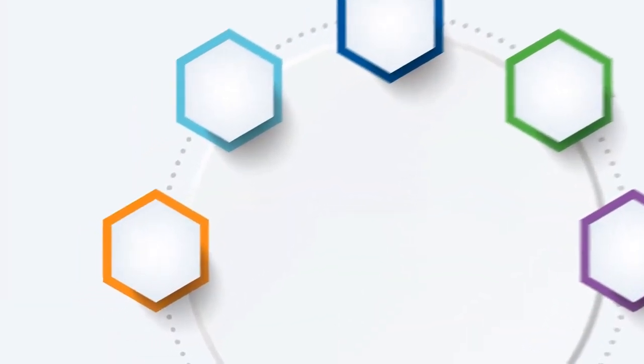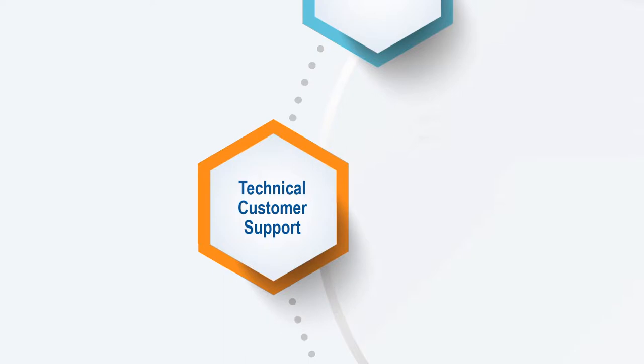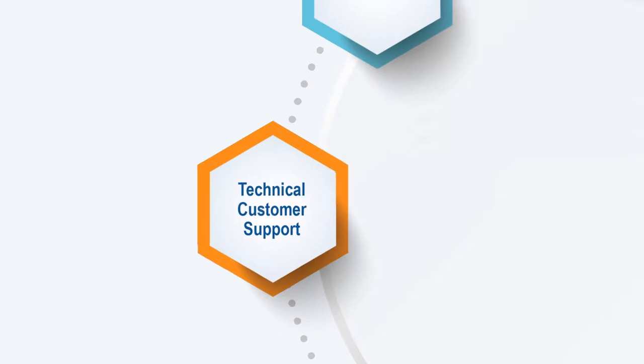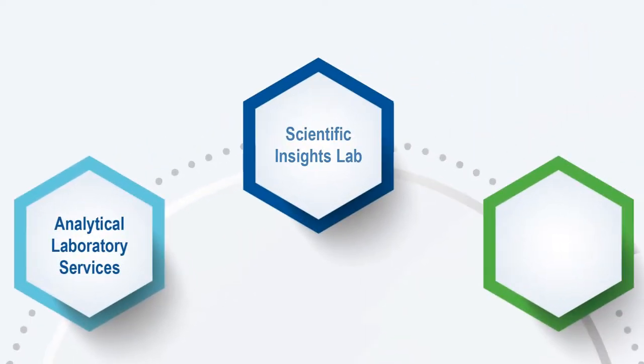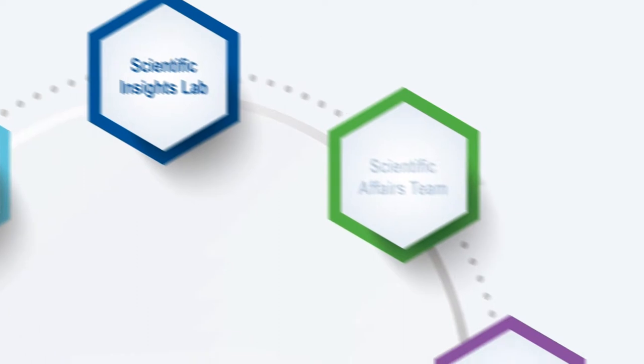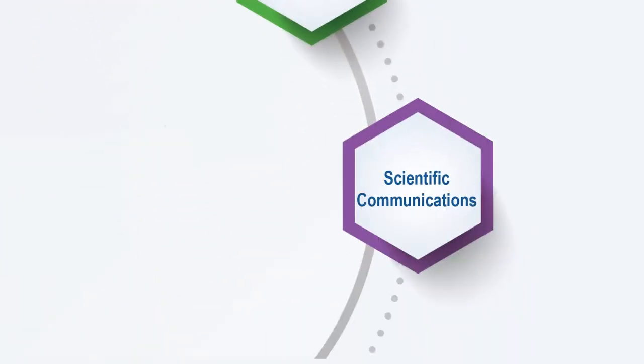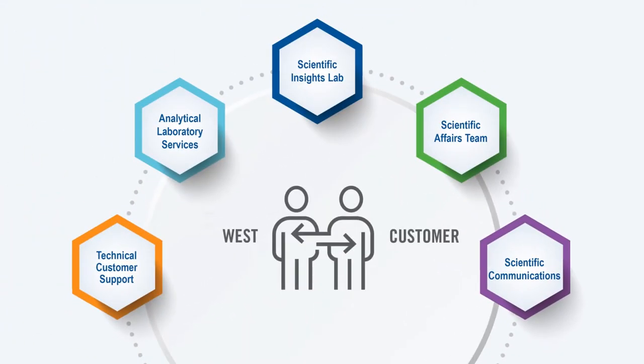Scientific Affairs and Tech Services is an umbrella organization consisting of five different groups. The first group is TCS, or Technical Customer Support. The second group is Analytical Laboratory Services. We also have a Scientific Insights Laboratory, our Scientific Affairs Organization, and our Scientific Communications Organization. The purpose of these groups is for them to really work together and synergize to bring the insight and assistance to our customers, and then also to synergize with other functions within WEST as needed.